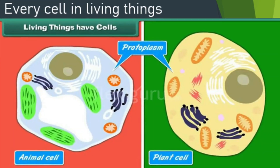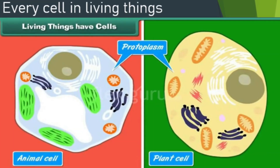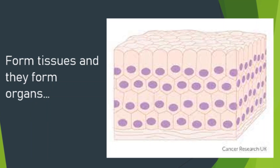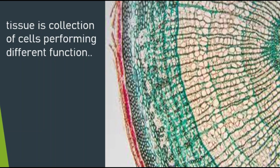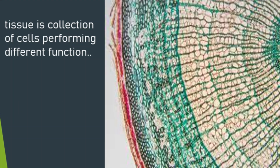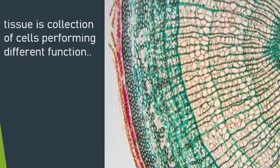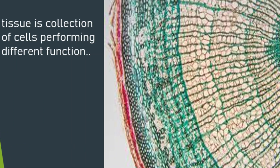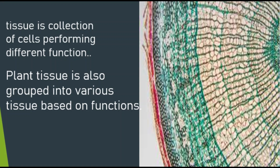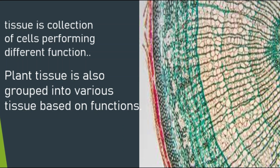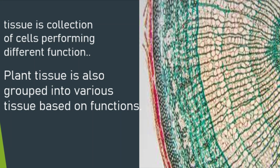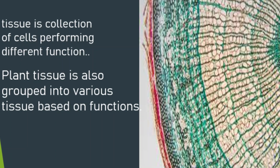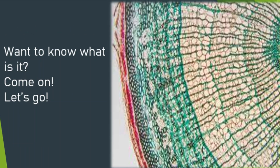Every cell in living things forms tissues, and tissues form organs. A tissue is a collection of cells performing different functions. Plant tissue is also grouped into various types based on functions.